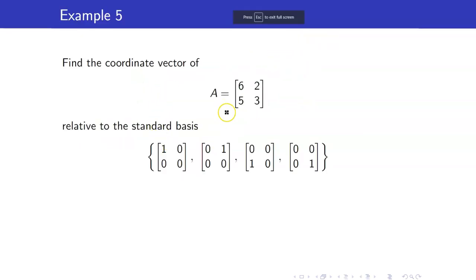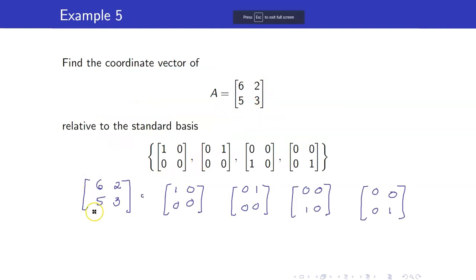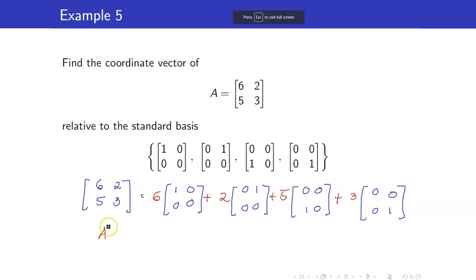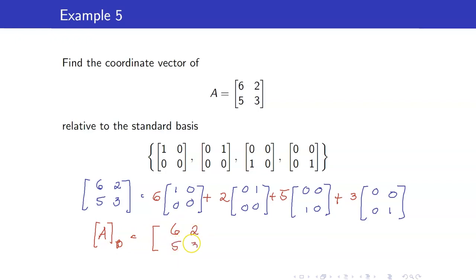Next, let us find the coordinate vector of a 2x2 matrix with respect to the standard basis. If we write this matrix as a linear combination of these 4 vectors, the scalars will be 6, 2, 5, 3. Therefore, the coordinate vector of A relative to the ordered basis B is just equal to itself: (6, 2, 5, 3).